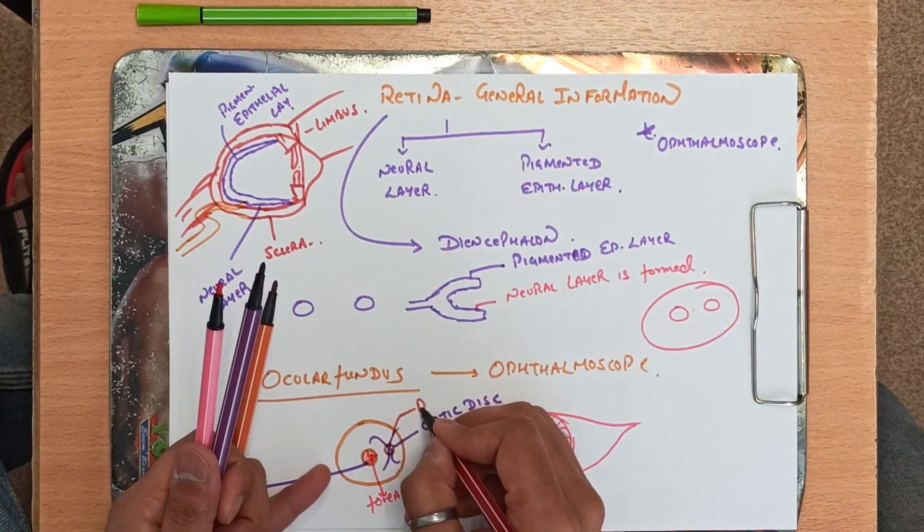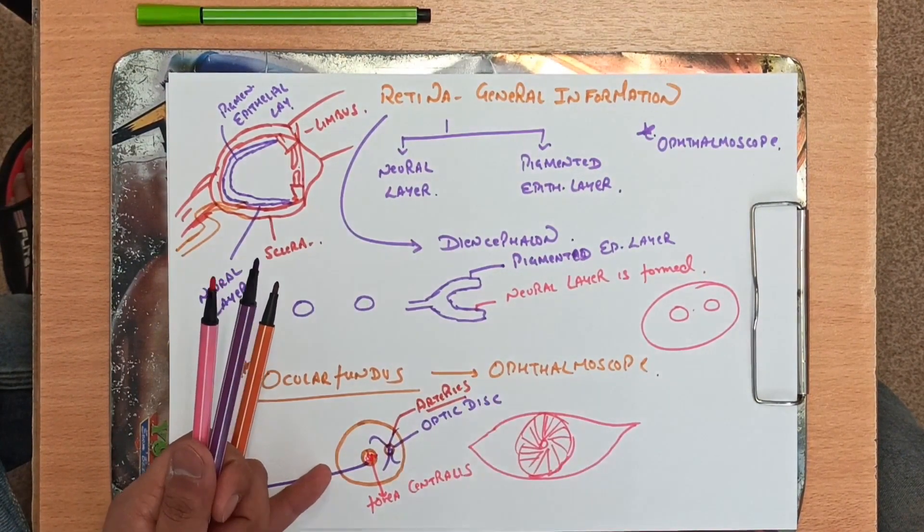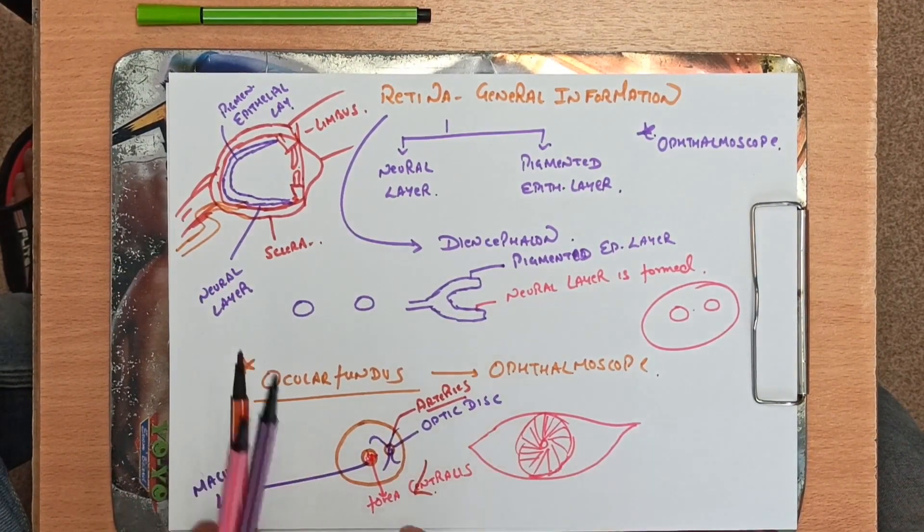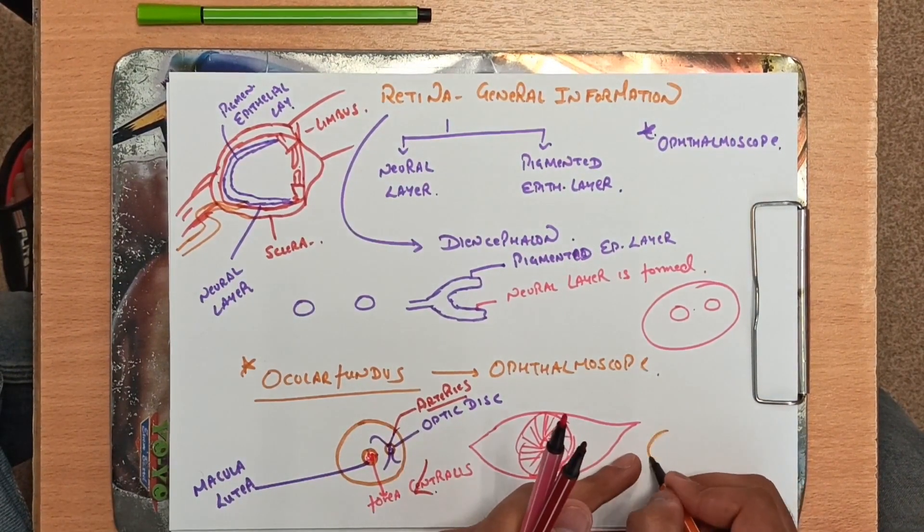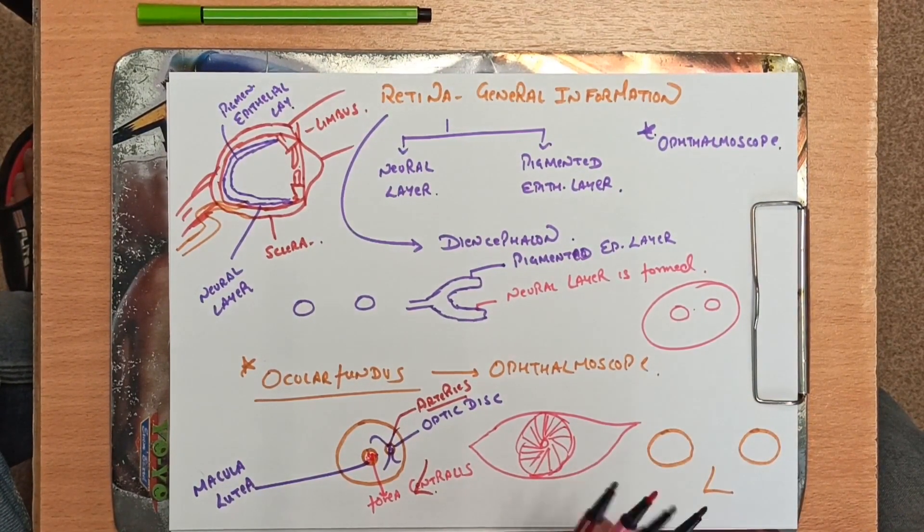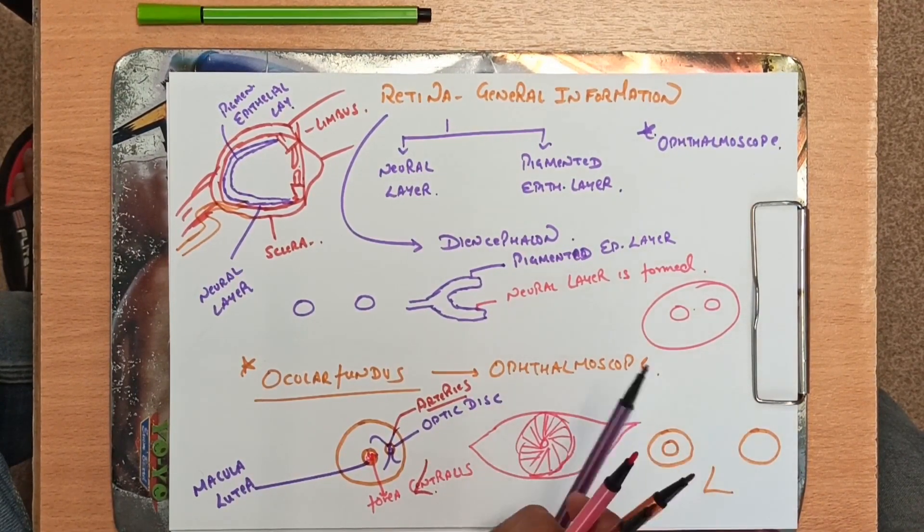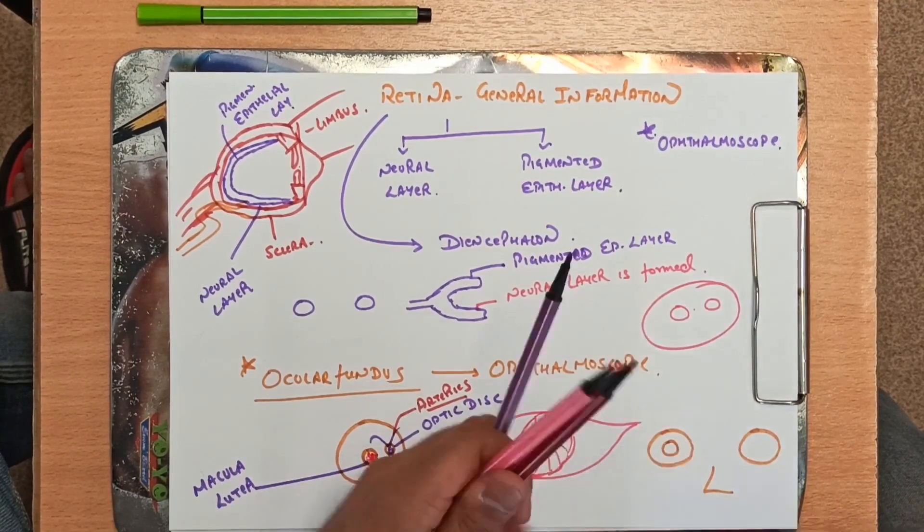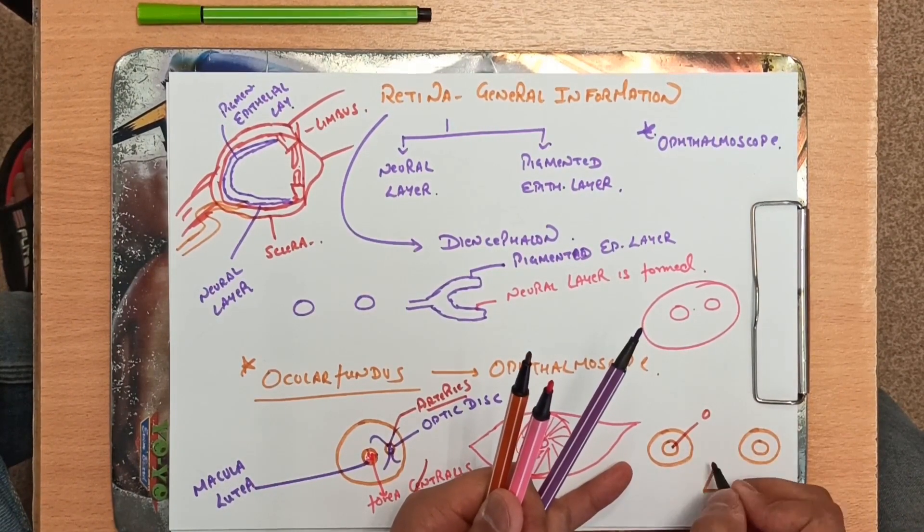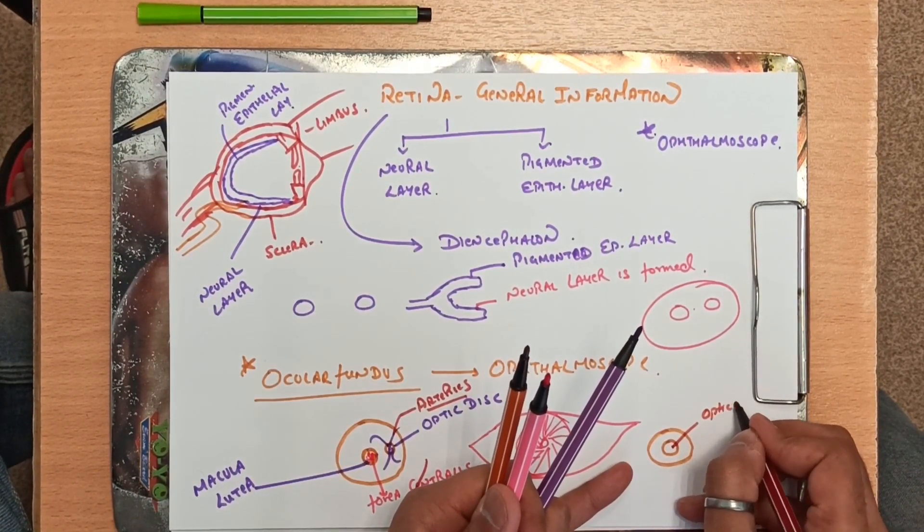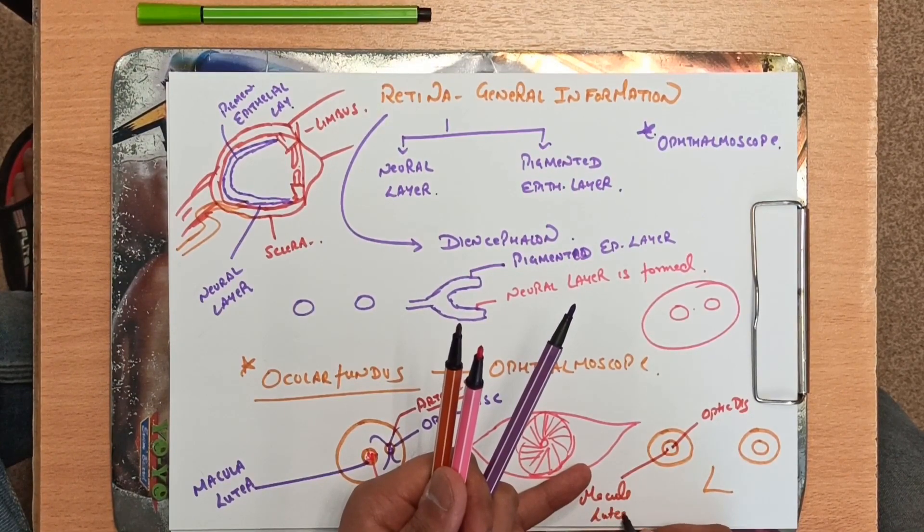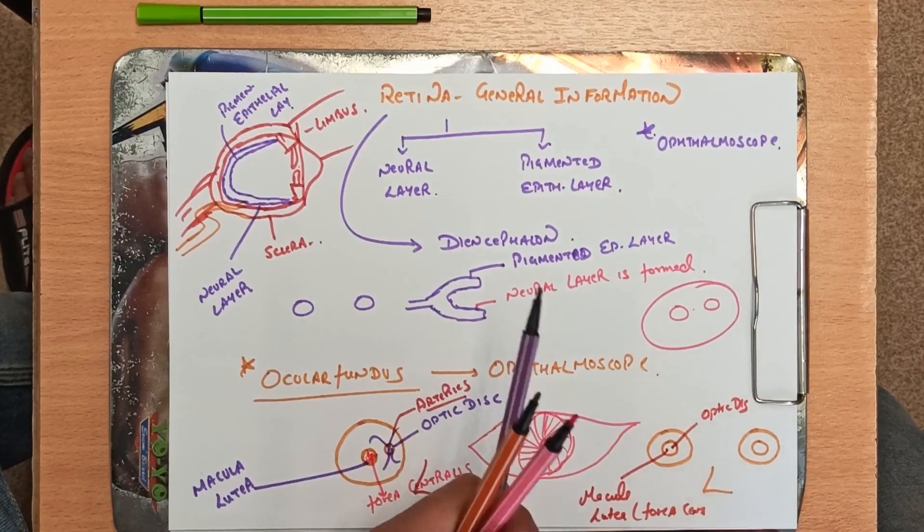You can see that these are the arteries. This is the temporal branch, this is the nasal branch. Now suppose this is your nose. Let me make here - these are two eyes, this is nose. The portion which is medial is called medially. Nose is on the middle plane. This is optic disc, whereas this portion which is on the lateral side is called macula lutea which contains in it the fovea centralis.